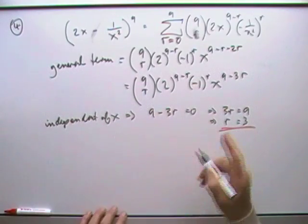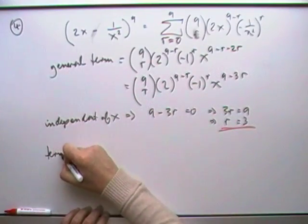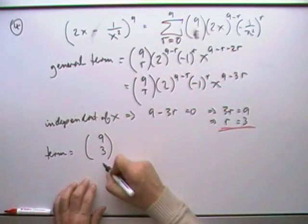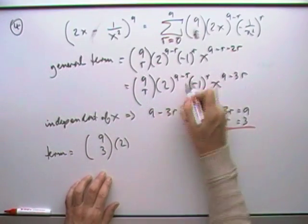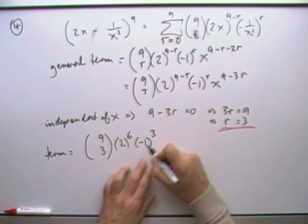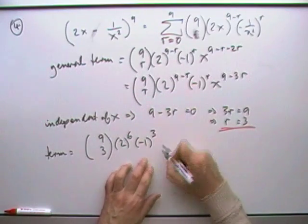Next part. So what would that term actually be? The term would be just put 3 in place of all these r's: 9 choose 3, 2 to the 9 take away 3, so that's 2 to the 6, negative 1 to the 3, so that negative is still there. And then obviously x to the 0.